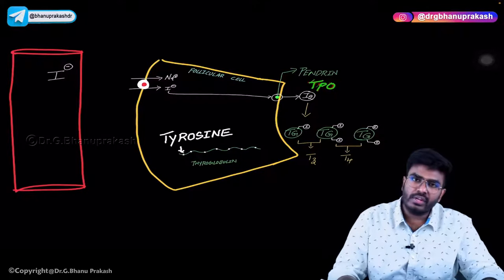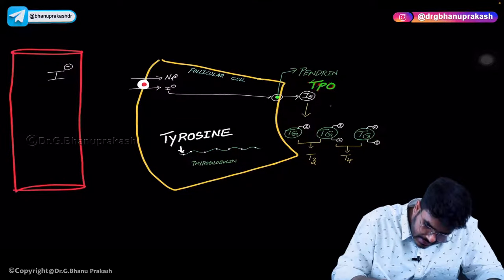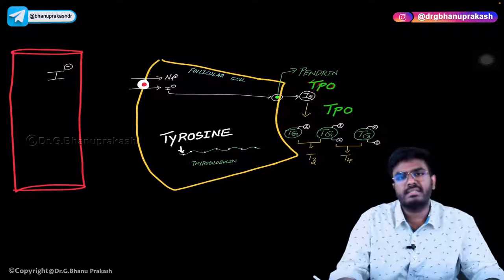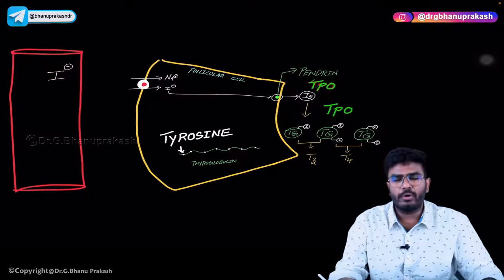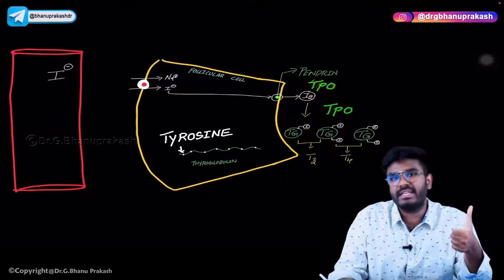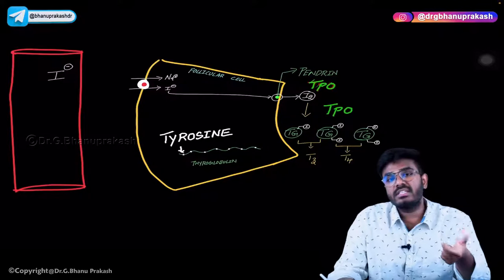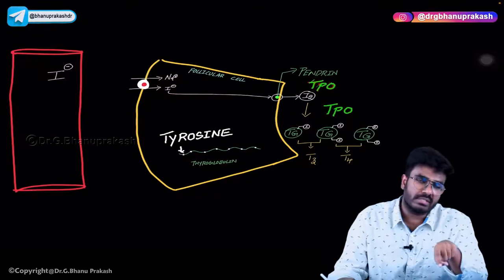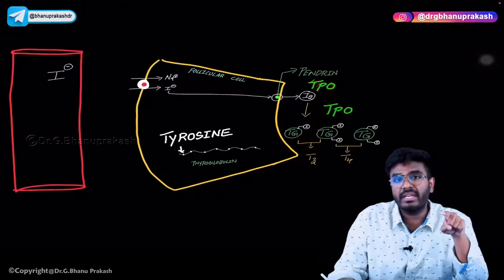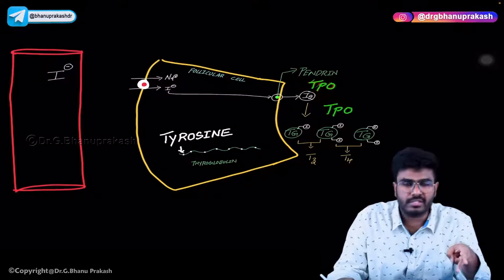Which enzyme is involved in organification? The same enzyme — thyroid peroxidase, TPO. Thyroid peroxidase performs first the oxidation process, and is also involved in organification, where iodines are being added onto thyroglobulin.